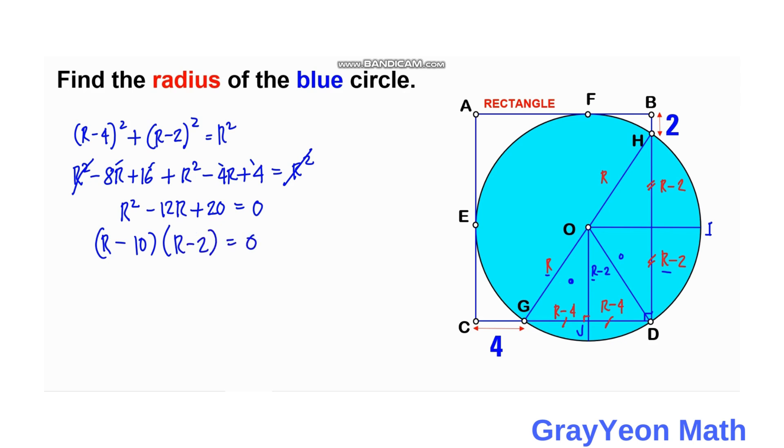So we have two possible solutions: R minus 10 is equal to 0, and the other one is R minus 2 is equal to 0. So the first one is R is equal to 10, and the other one is R is equal to 2.